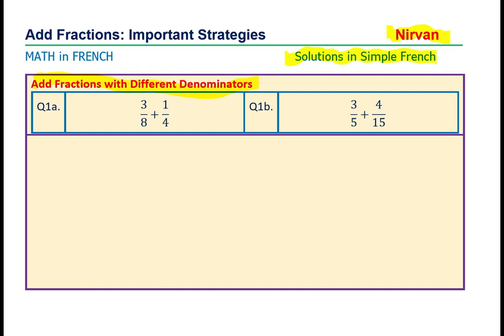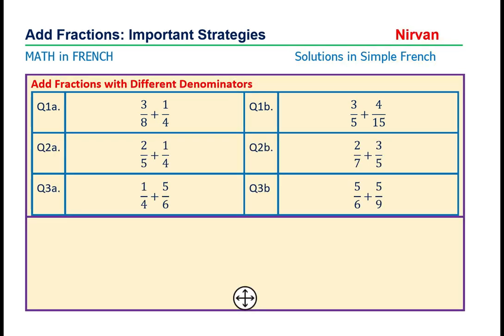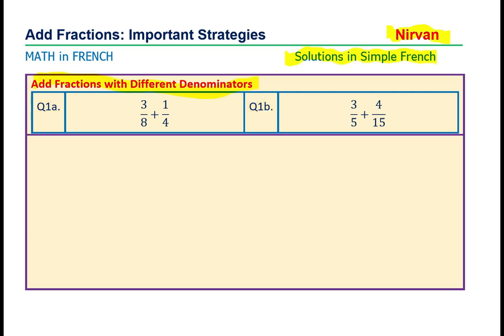Il y a des questions ici pour toi à faire et je vais faire ces questions. Première question. Trois sur huit plus un sur quatre. Comment est-ce que nous pouvons ajouter? Tu peux voir que le dénominateur est différent. Ça c'est quatre et ça c'est huit.